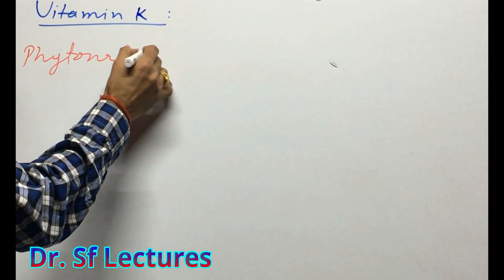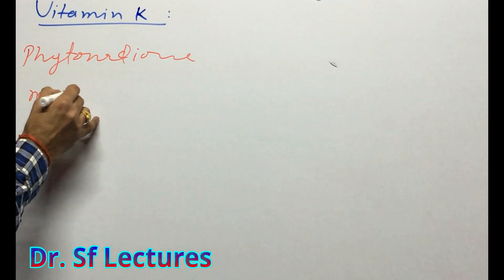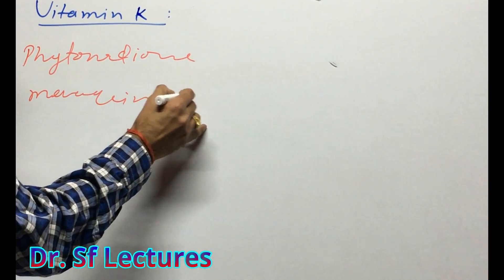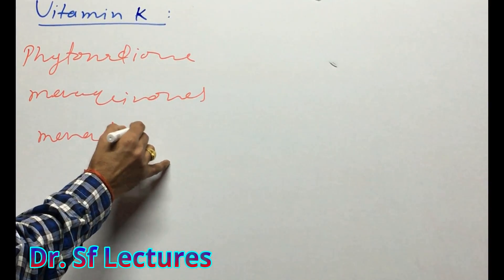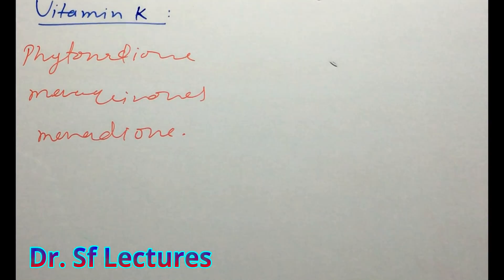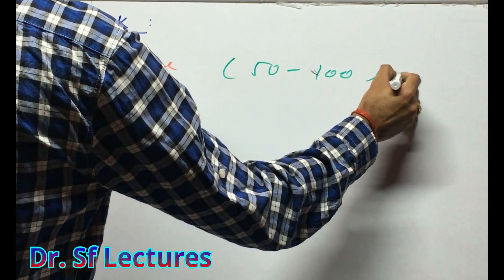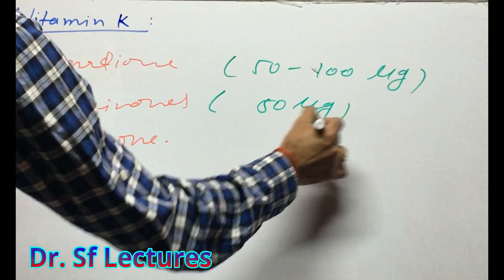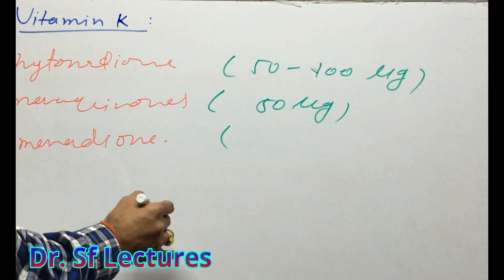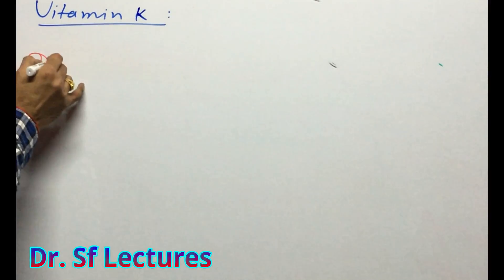Here are some generic names of Vitamin K. The first one is phytondion, the second is menaquinone or naphthoquinone, and the third is menadione. The dose of phytondion is 50 to 100 micrograms. Menaquinone we can use 50 micrograms, and menadione we can use also 50 micrograms.